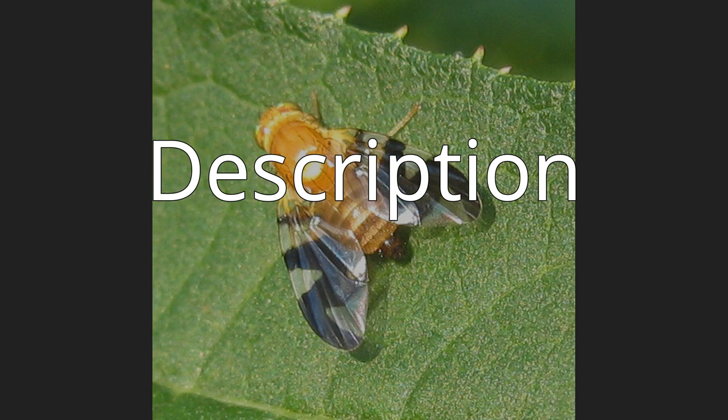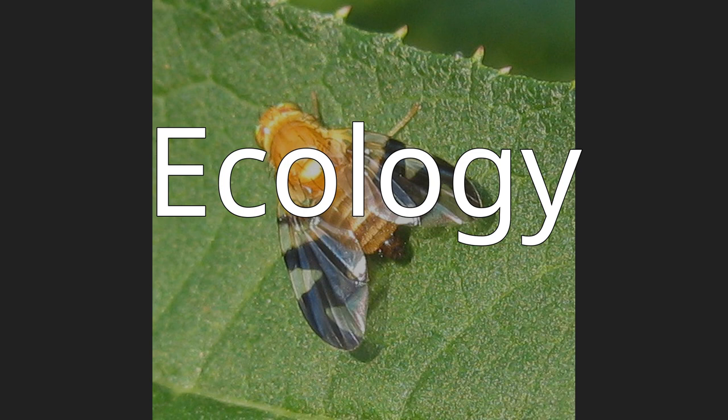Ecology. The larvae of almost all Tephritidae are phytophagous. Females deposit eggs in living, healthy plant tissue using their telescopic ovipositors. The larvae find their food upon emerging. The larvae develop in leaves, stems, flowers, seeds, fruits, and roots of the host plant, depending on the species.